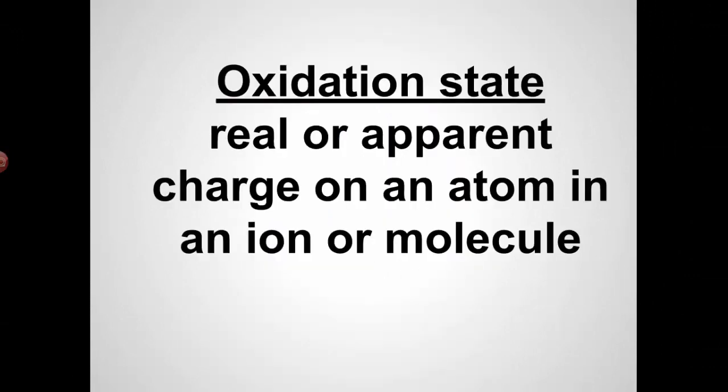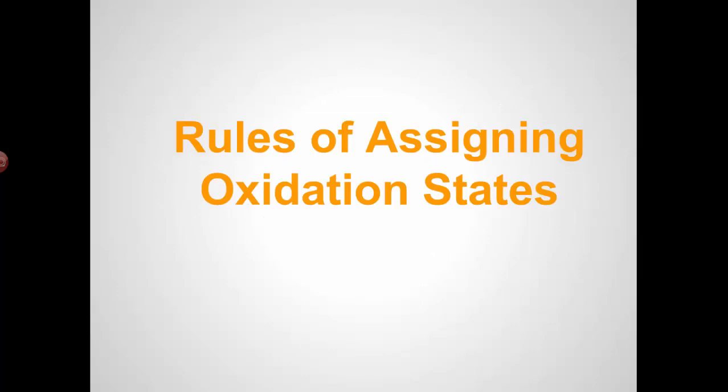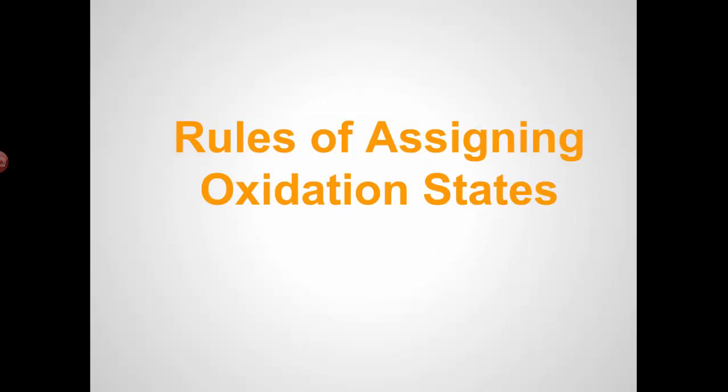So what do we mean by oxidation state? Well, that's a real or apparent charge on an atom in an ion or molecule. There are some rules for assigning oxidation states. Some you just have to know, and then others you can determine algebraically.